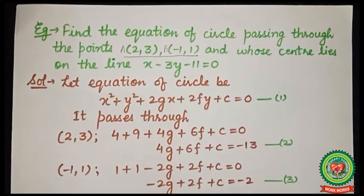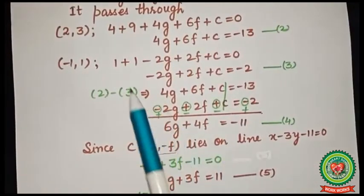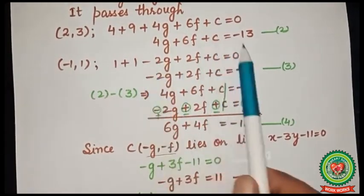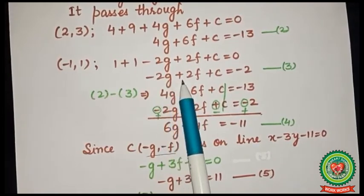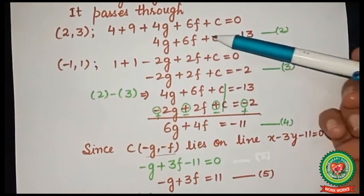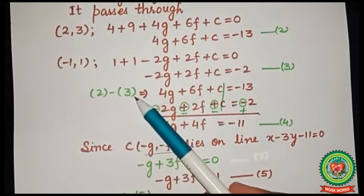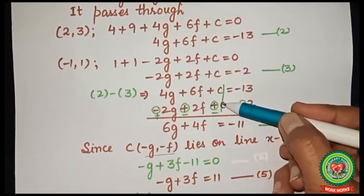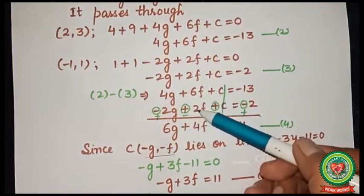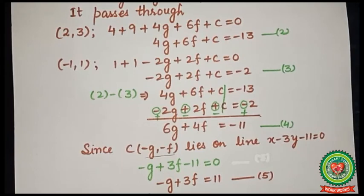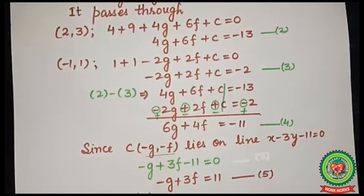Substituting point B (-1, 1): 1 + 1 - 2g + 2f + c = 0, giving -2g + 2f + c = -2. Mark this equation 3. Subtracting equation 3 from equation 2 to eliminate c: c cancels, giving (4+2)g + (6-2)f = -13+2, so 6g + 4f = -11. Mark this equation 4.